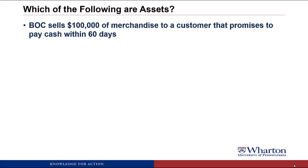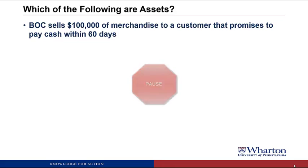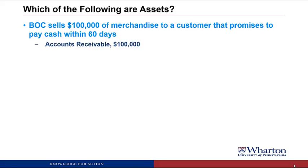BOC sells $100,000 of merchandise to a customer that promises to pay cash within 60 days. This will be an asset called accounts receivable. It's an asset because there was a transaction where we delivered goods to a customer, and in return we got a promise from them to pay cash. The value of the future benefits can be reasonably estimated because it's the amount that customer owes us on the invoice, and that amount is $100,000.